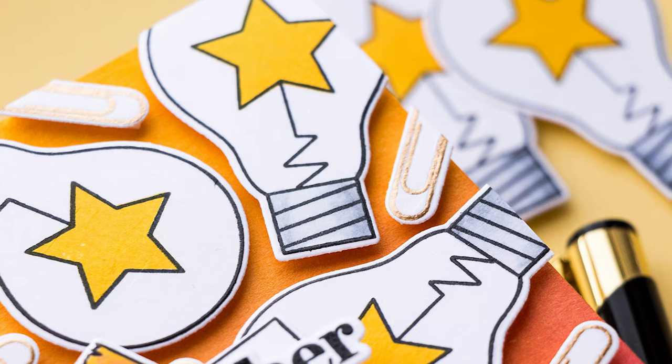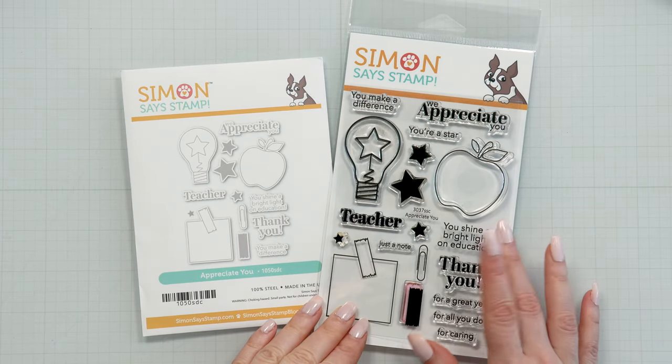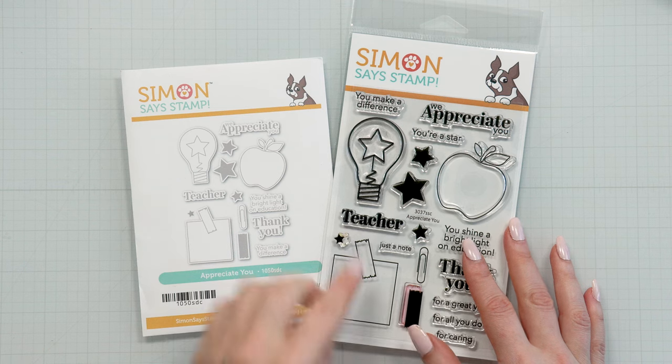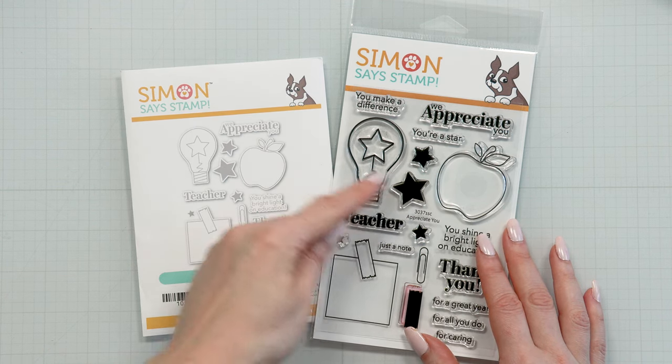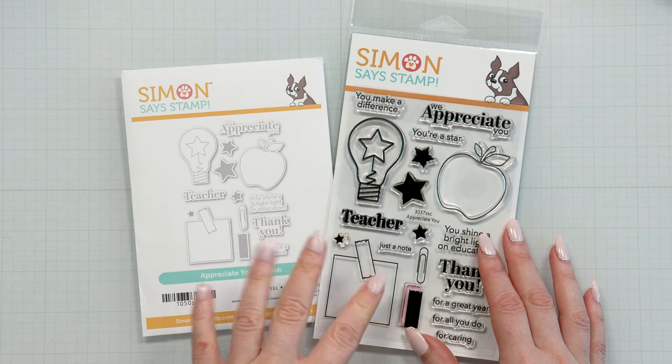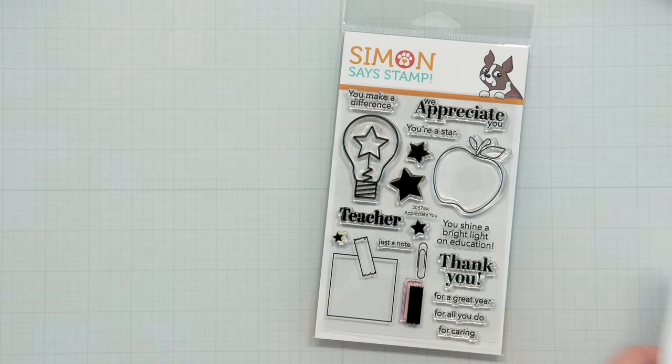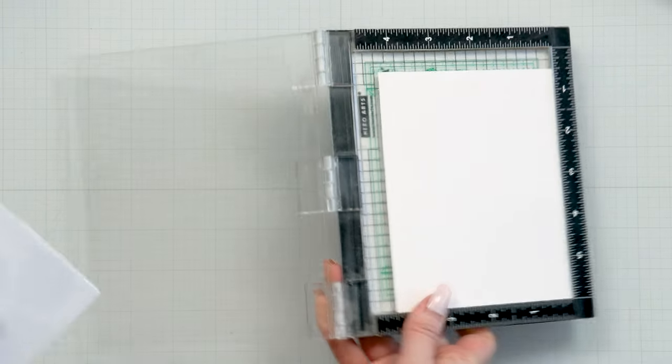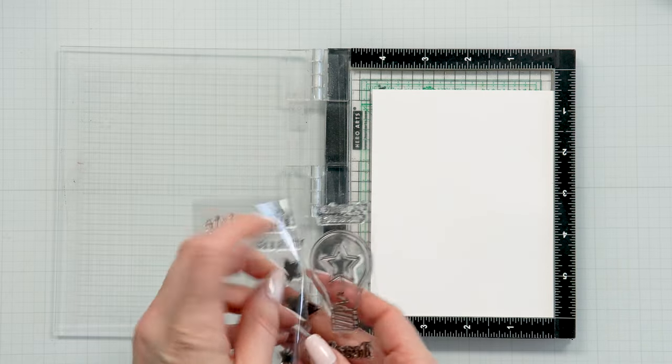I particularly like the light bulb in this stamp set. There's also a solid star that you can stamp inside the light bulb and I figured this would make a really clever and unique pattern for a card. I'm also going to combine the light bulb with a paper clip. I think it's adorable and I really like one of the sentiments in this stamp set. It reads, you shine a bright light on education and I thought it was so fitting.